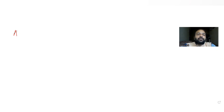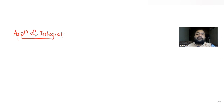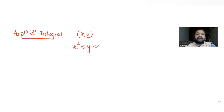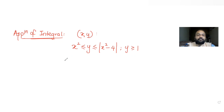Hi guys, today's question is from the topic of applications of integrals. We are taken this from JEE Mains 2023, and we have been asked to find the area of the region enclosed between the curves given by x and y, where x² ≤ y ≤ |x² - 4|, and also y ≥ 1. There are four options given to us: first is 4/3(4√2 + 1).